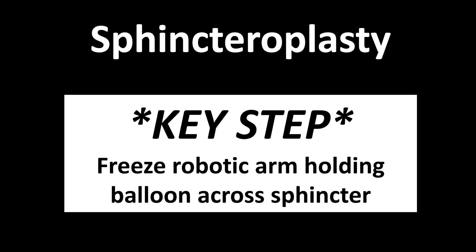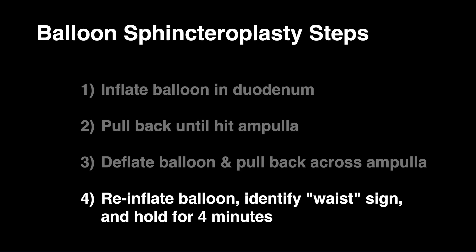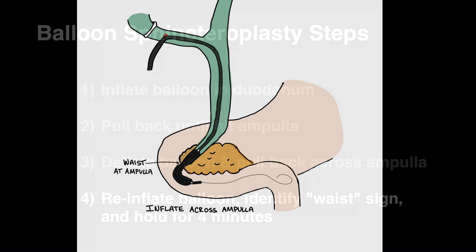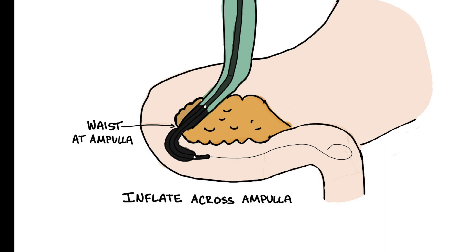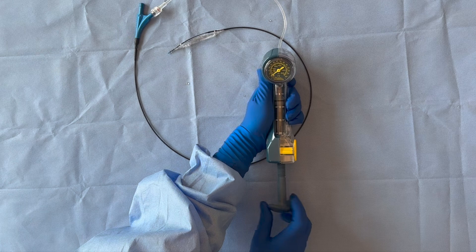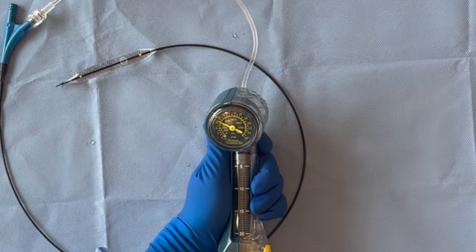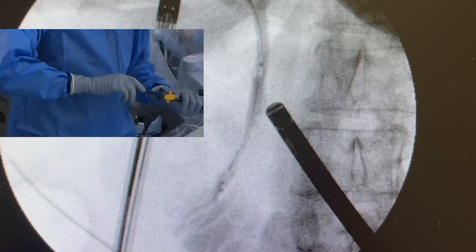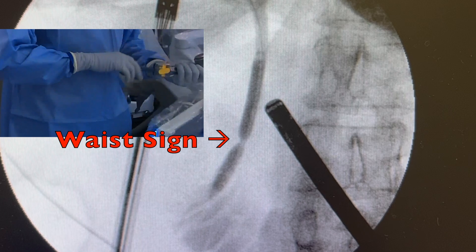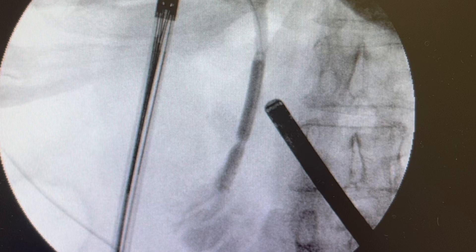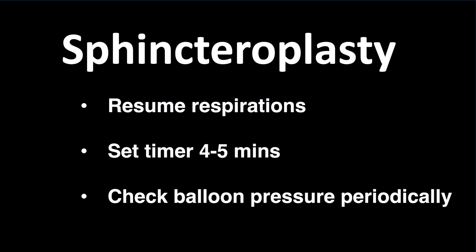The final step is to now reinflate the balloon and identify the waist sign to confirm you are across the ampulla, and then hold the balloon in place. Inflate the balloon to the manufacturing guidelines of atmospheric pressure to achieve the desired balloon diameter, usually between 8 to 12 atmospheres. Under fluoroscopy, watch as you are inflating the balloon and look for the waist sign, which is a narrowing in the balloon where the ampullary sphincter is located. This only lasts for a few seconds and then the balloon will appear uniform. At this time, you may resume respirations and set a timer for 4 to 5 minutes, checking on the balloon every 30 to 45 seconds to make sure you are still at the recommended atmospheres of pressure. You may need to reinflate a little intermittently.